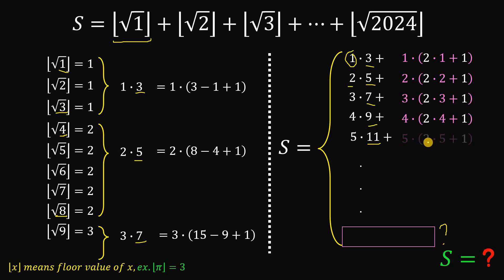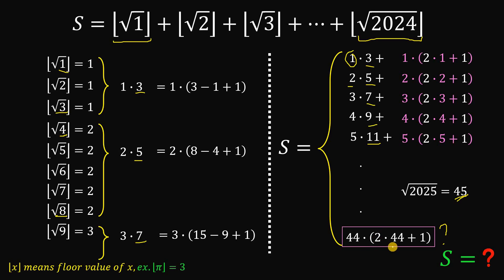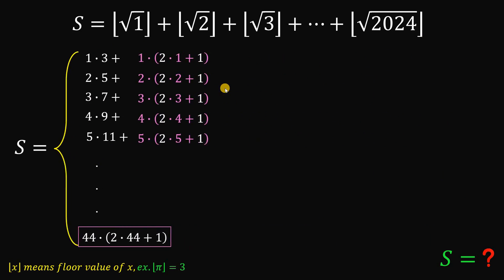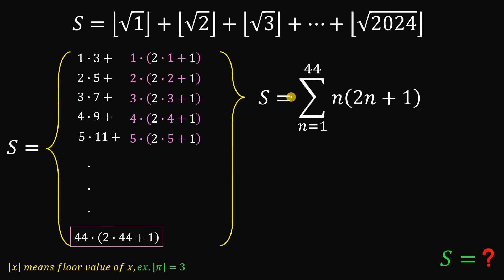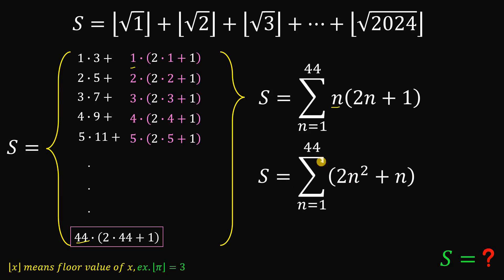The pattern continues — for example, 11 is 2·5+1. Now, surprisingly, square root of 2025 is 45, meaning the last number before we reach 2025 is 2024. Therefore the last term uses the integer before 45, which is 44: so 44×(2·44+1). We can now rewrite S using summation notation: S equals the sum from n=1 to 44 of n×(2n+1). Multiplying out, this becomes the summation from n=1 to 44 of (2n² + n).